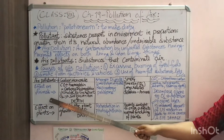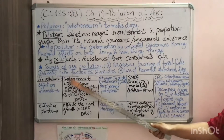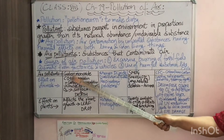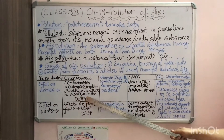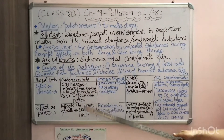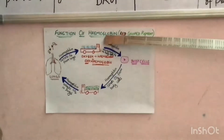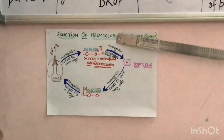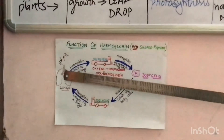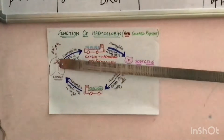Now we will concentrate mainly on four air pollutants described in your book. The first air pollutant is carbon monoxide. To understand the effect of carbon monoxide on human or animal health, we must first understand the function of hemoglobin in our body. Hemoglobin is a red color pigment. When you inhale air in the lungs, the hemoglobin in the blood carries oxygen from the lungs to the rest of the body.